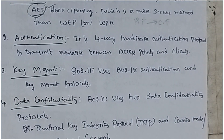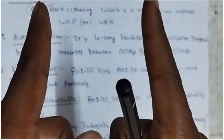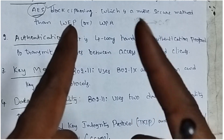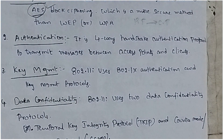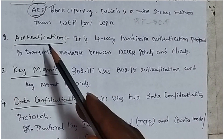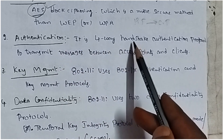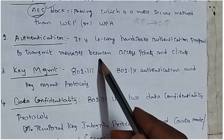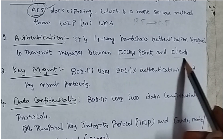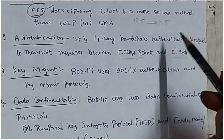The next feature is authentication. Authentication means the sender and receiver — both parties — have to verify that each person is valid. Authentication is nothing but identification. In wireless LAN security, it has a 4-way handshake authentication protocol to transmit messages between the access point and the client.